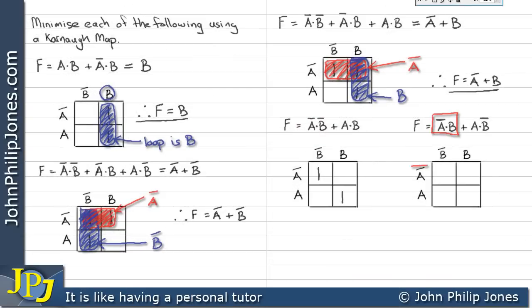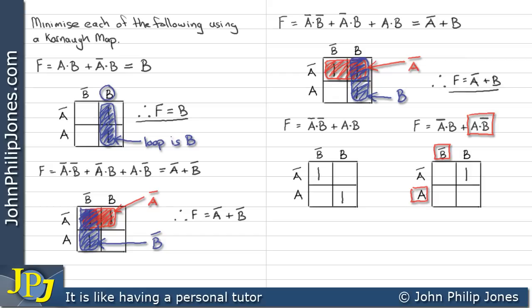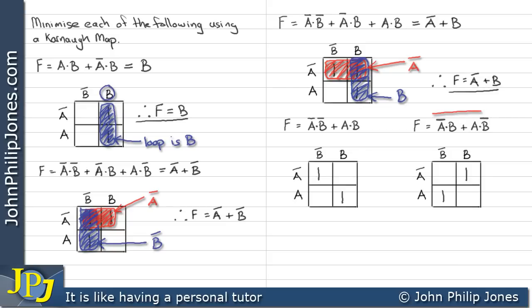For this example, we'll look at this minterm, which is not A and B, and that will mean we will write a 1 here. If we have a look at the other minterm, we can see that is A and not B, so we will plot a 1 in this position here. Now again, it might be very tempting to loop here, but we mustn't do that — we mustn't loop a diagonal. This is another example of something that does not minimise.